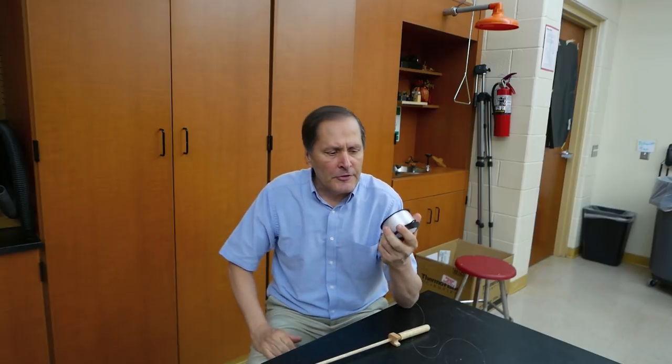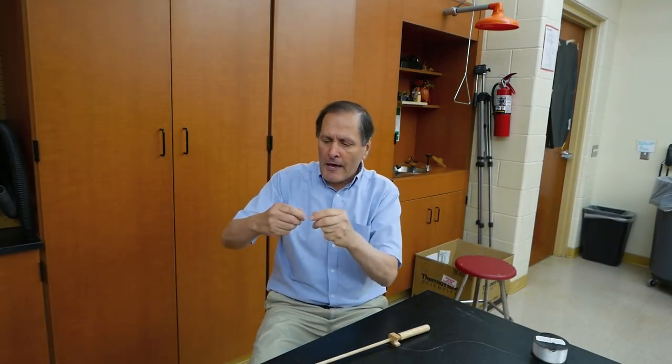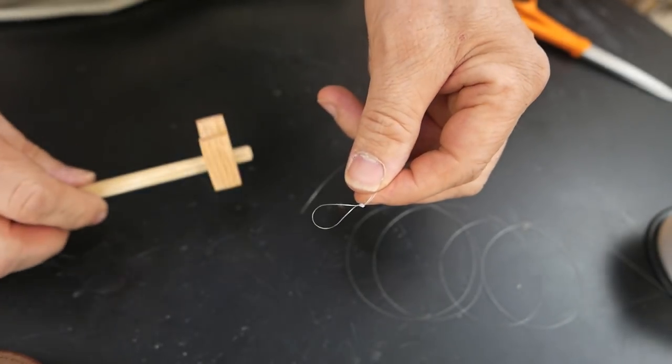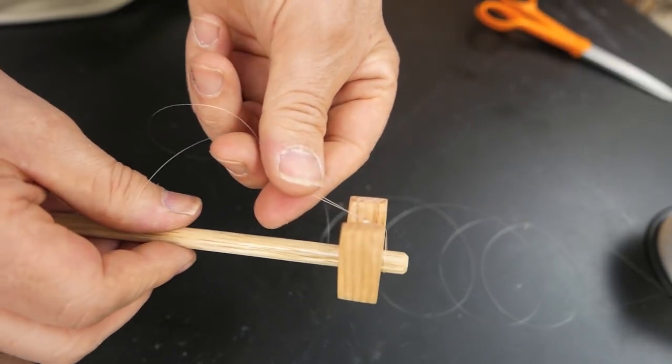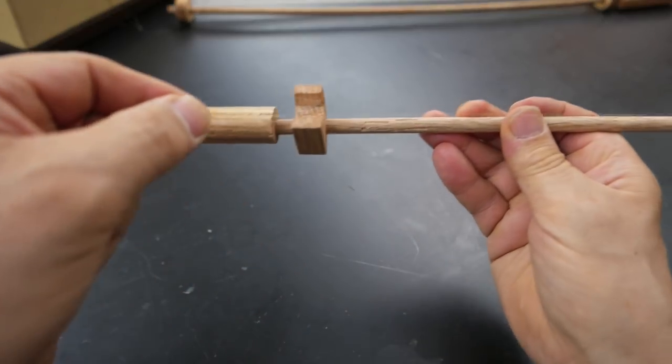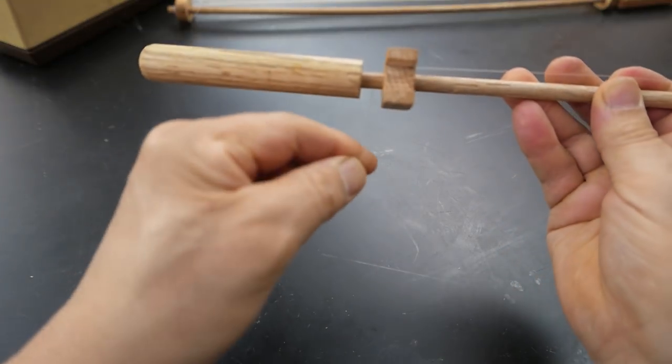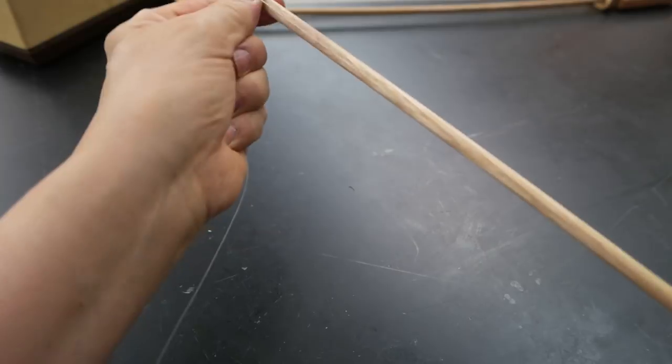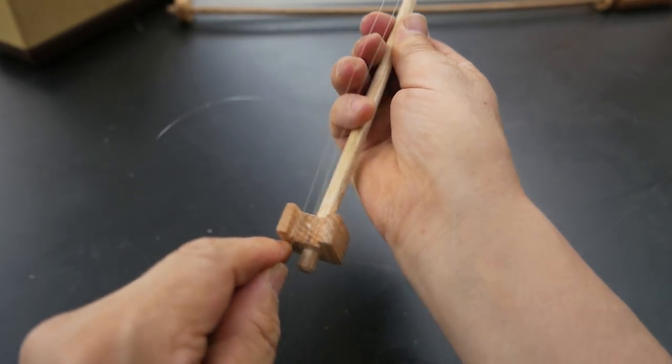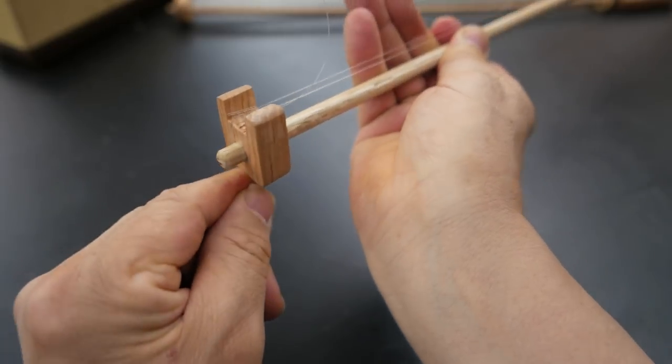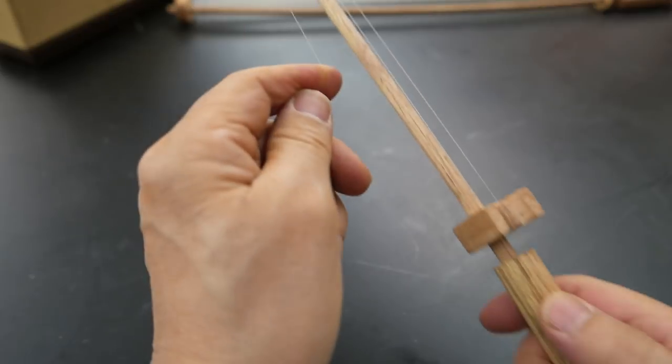It's now time to add the nylon fishing string. In this case I'm using 8 pound test, and I'm going to start by adding a loop to the one end. I've left a little bit of extra string on the end and I'm going to use that to secure the string when I'm finished. So I simply attach the string and slide it down to the opposite end, wrap it around the dowel, back to the holder, stretch it down to the other side again, under the holder, wrap it around. I'll repeat this process about a dozen times until I'm ready for the next step.